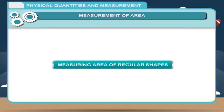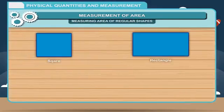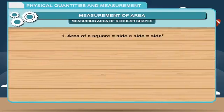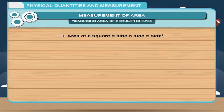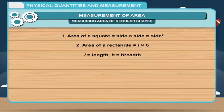Measuring Area of Regular Shapes. The area, A, of a regular surface such as squares, rectangles and triangles can be calculated by using specific formulas. 1. Area of a square is equal to side × side, which equals side squared. 2. Area of a rectangle is equal to length × breadth (L × B), where L is length and B is breadth.